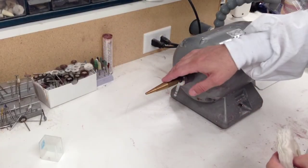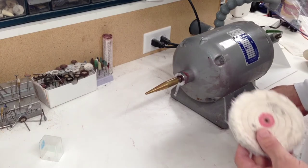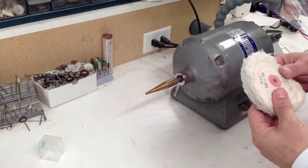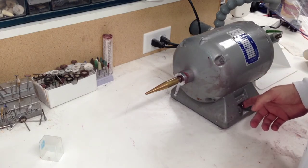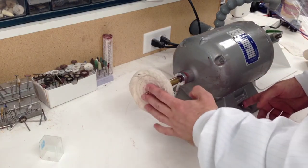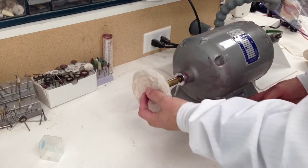On this tapered side of the lathe, you are going to use your rag wheel, which is used for polishing. You also have rag wheels used for pumicing. The way to apply the rag wheel is to simply put it on as far as you can.